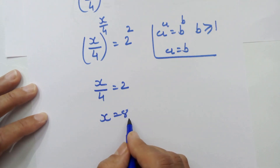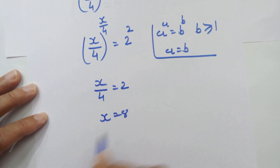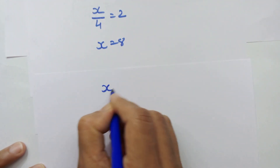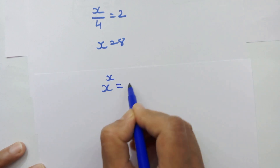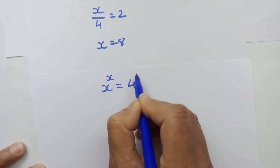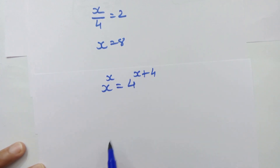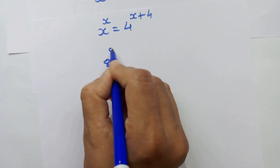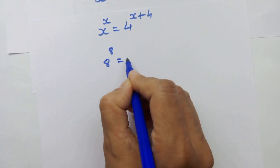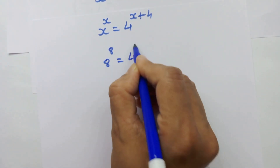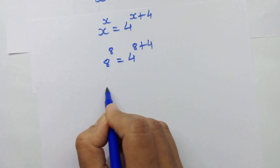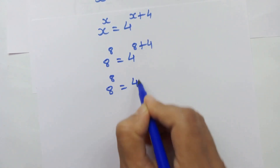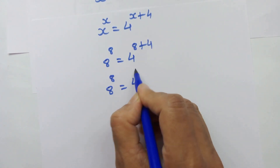Now let's put this value of x in our main equation. Our main equation is x raised to x is equal to 4 raised to x plus 4. So 8 raised to 8 is equal to 4 raised to 8 plus 4, which gives 8 raised to 8 is equal to 4 raised to 12.